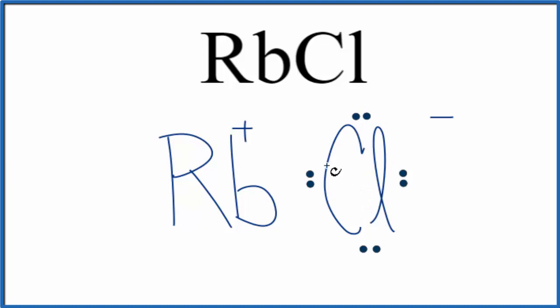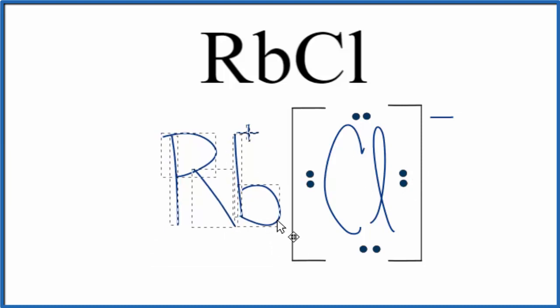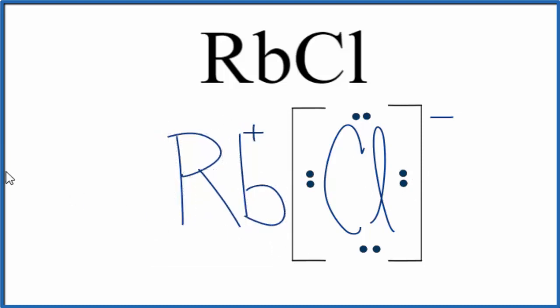It's not shared, like in a covalent bond. So now we have a positive ion, the rubidium ion, and then the negative ion, the chloride ion. That negative and that positive are attracted to each other. That's what forms our ionic bond.